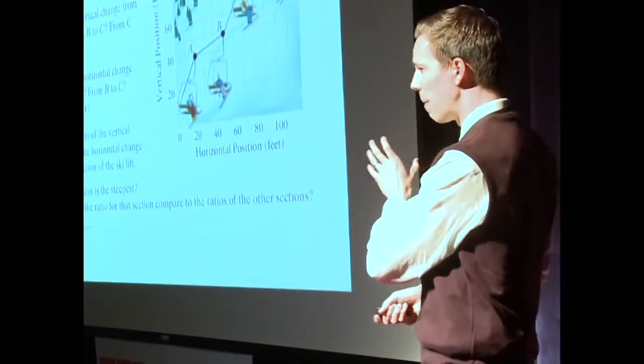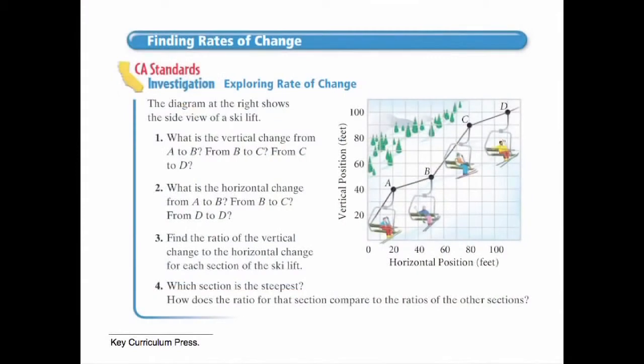So I can diagnose the problem a little more specifically in math. Here's a really cool problem, I like this. It's about defining steepness and slope using a ski lift. But what you have here is actually four separate layers.